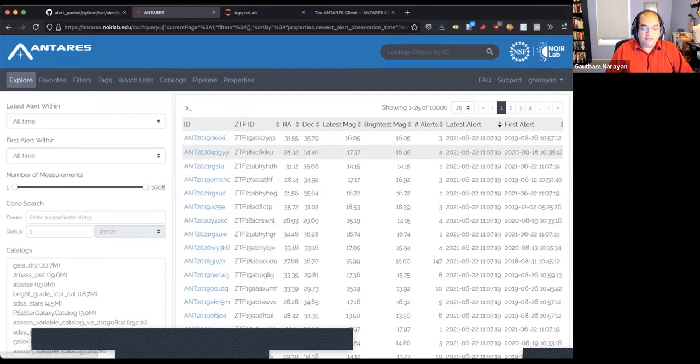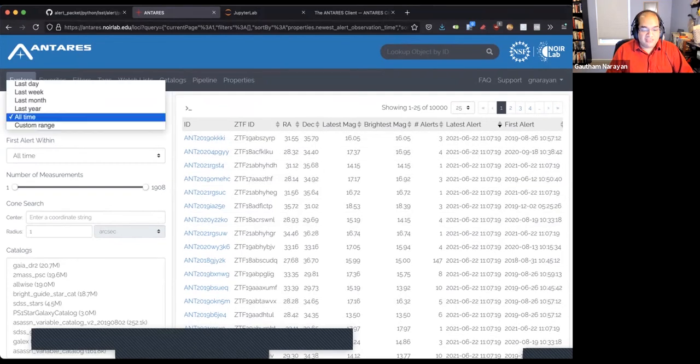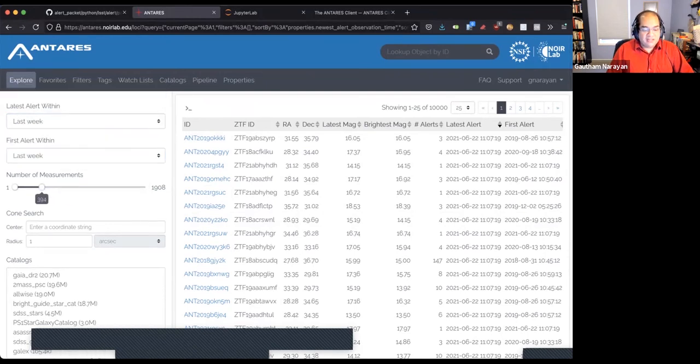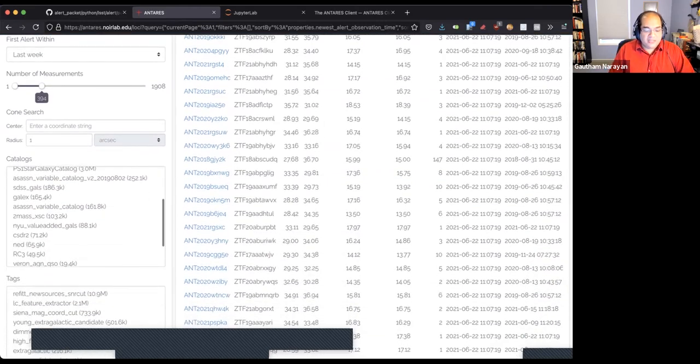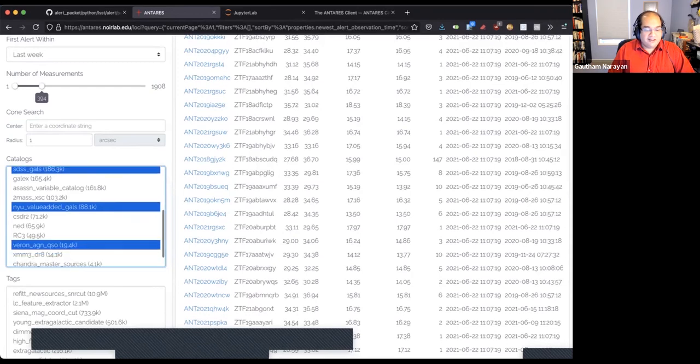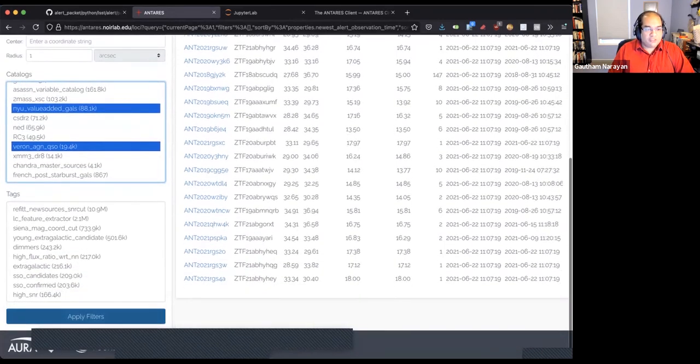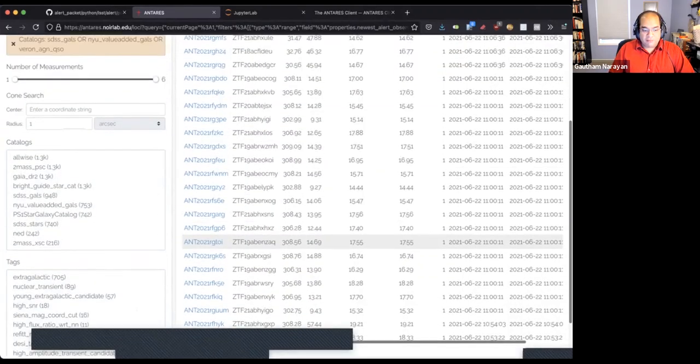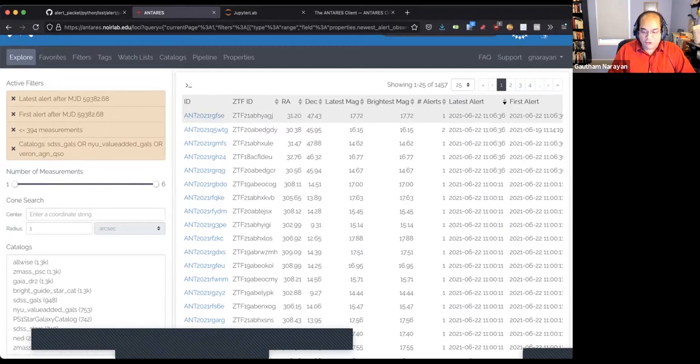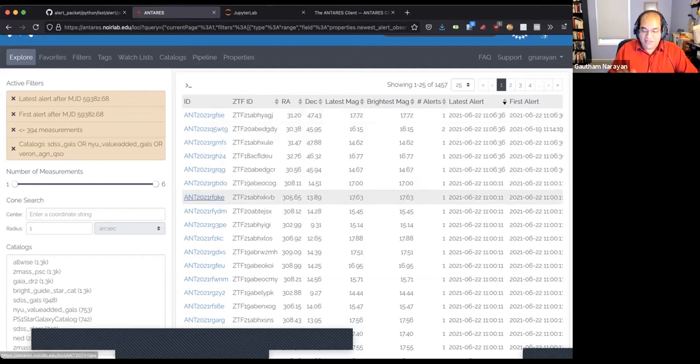The alerts from Antares come in the form of these objects from ZTF. You can decide that you only want to look at objects where the latest alert was within the last week. Maybe you want to limit the number of measurements it has. Maybe you want to ask if people here are particularly interested in galaxies, we can demand that it is cross-associated with SDSS catalogues, NYU's Value Added Catalog. Maybe you also are particularly interested in AGN, so we can see if we can find something that satisfies all of those criteria. And sure enough, after a couple of seconds of processing, you get all the latest alerts.